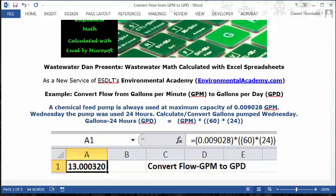And in the formula bar you can type in this formula: equal sign, open parentheses, 0.009028, close parentheses, times, multiplication key, open parentheses, 60, close parentheses, multiplication key, open parentheses, 24, two close parentheses, and then press enter or the return key.